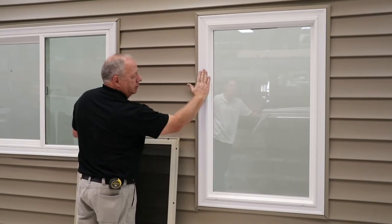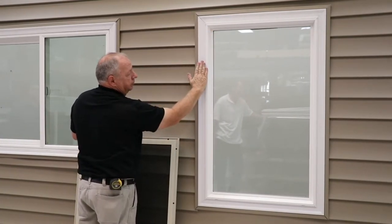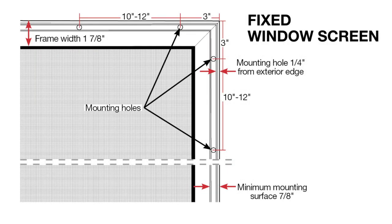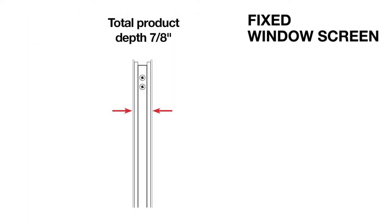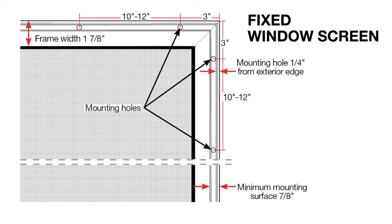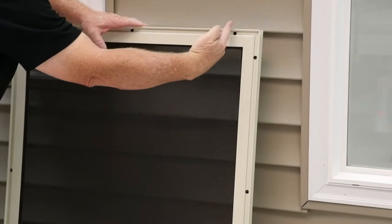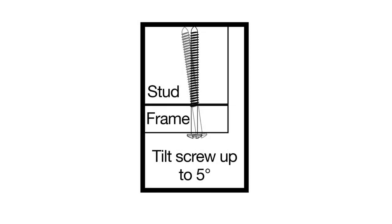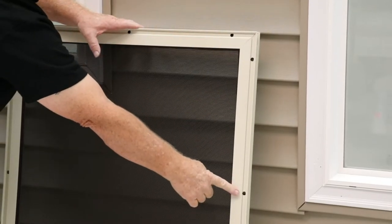Now let's review the screen frame and mounting surface specifications of each ultimate window screen type. Fixed window screens are surface mount only and feature a 1-7/8 inch wide and 7/8 inch deep frame. The minimum mounting surface is 7/8 of an inch at the outside of the frame. When installing fixed window screens, mounting screws can be angled up to 5 degrees as needed to reach a framing member. Mounting holes are 3 inches from each corner and 10 to 12 inches apart in between.